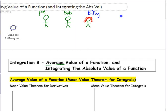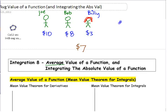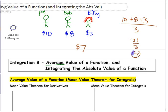If you ask a grade six or seven student, they'd say the average is when you add everything together and divide by how many there are. So if one person has ten dollars, another has eight dollars, and the third has three dollars, the average is ten plus eight plus three divided by three, which is 21 divided by 3 — seven dollars.